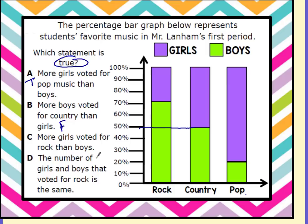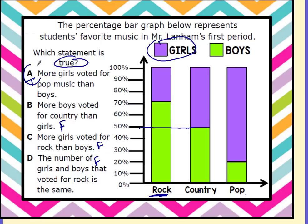Statement C: more girls voted for rock than boys — looking at rock, there is more green than purple, so this is false. Statement D: the number of girls and boys that voted for rock is the same — for that to be true they would both need to be 50%, but there is clearly more green, so this is also false. The only true answer is A.